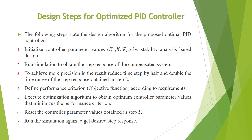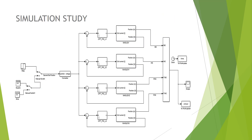These are the design steps for implementation of optimized PID controllers. First, initialize the controller parameter values Kp, Ki, and Kd based on stability analysis. Then run the simulation to obtain the step response of the compensated system. To achieve more precision, reduce the time step by half and double the time range of the step response. Define the performance criteria according to requirements. Execute the optimization algorithm to obtain optimal controller parameter values that minimize the performance criteria. Reset the controller parameter values obtained and finally run the simulation again to get the desired step response. The computer simulation is done in MATLAB version 2016a, and this figure shows the simulation model used to simulate the dynamical behavior of the Maglev system when various optimized controllers are implemented.